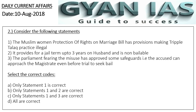Question 2: Consider the following statements. Statement 1: The Muslim Women Protection of Rights on Marriage Bill has provisions making the triple talaq practice illegal. Statement 2: It provides a jail term of up to three years for the husband and is non-bailable. Statement 3: Parliament, fearing misuse, has approved some safeguards — the accused can approach the magistrate even before trial to seek bail.